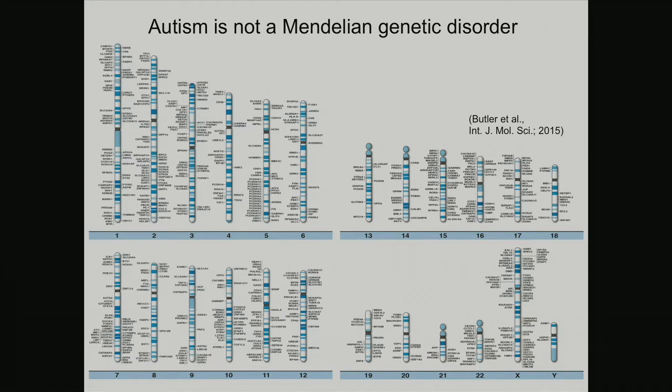Here's where it gets complicated. Across the 20 to 23 chromosomes, each little piece of font represents a different gene associated in some way with autism. Autism is not a Mendelian genetic disorder — it's not one gene, one phenotype like Gregor Mendel's pea plants. More broadly, neuropsychiatric disorders in general are not that way. They are very complex in their genetics, and so this is what we have to work with.